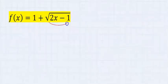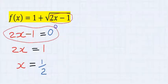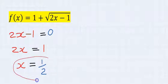Step number two. Solve the expression inside the square root. Zero can be allowed inside the square root. Hence, we equate it to zero. You can see x here is equal to 1 over 2.